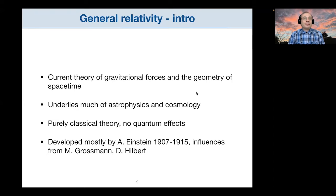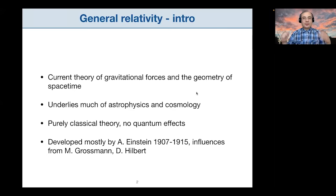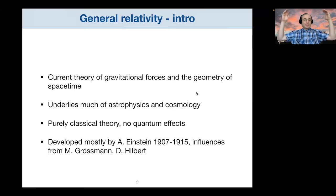From the point of view of modern physics, GR is a purely classical theory. It does not contain any kind of quantum effects — you won't find any Hamiltonian, wave equations, or states. It is a purely classical theory where the universe is at a particular state and there is a deterministic evolution of that state.